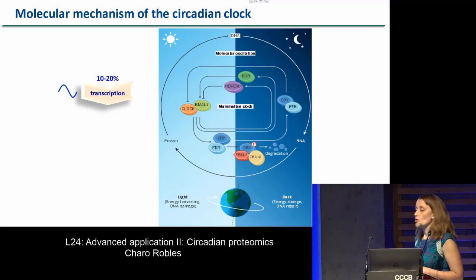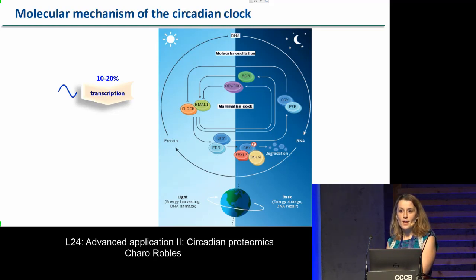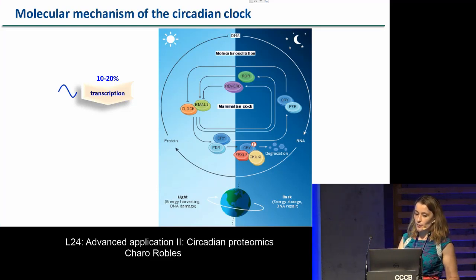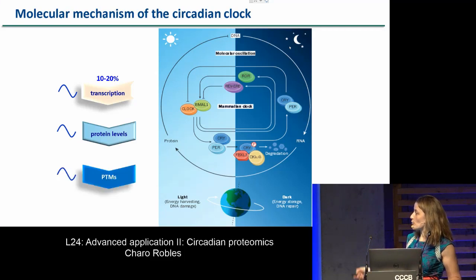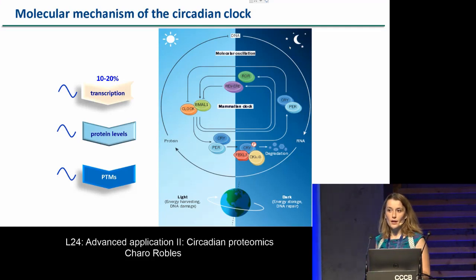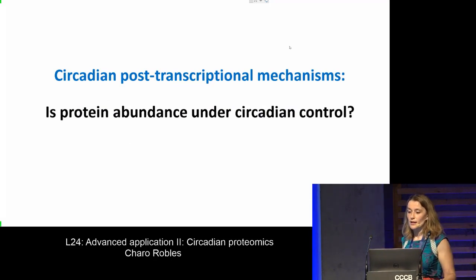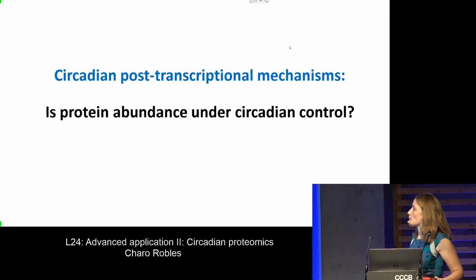When I joined Matthias' group, nothing was really known about proteins. For me this was striking — regulation of 50% of the genome has to have consequences. The question is: are you also regulating 50% of the proteome? And not only at the protein level, but also at the post-translational modification level. If you really want to control metabolic processes in a 24-hour manner, you may not need to control only transcription, but also protein abundance and, even more important, protein function through post-translational modifications.